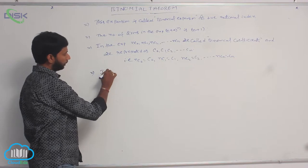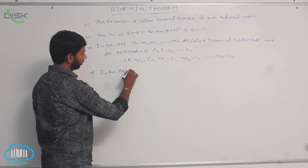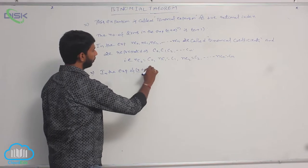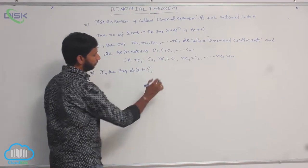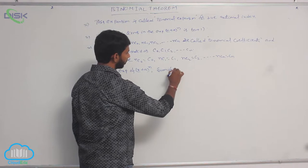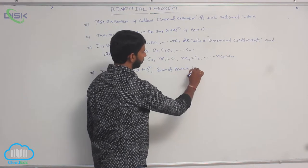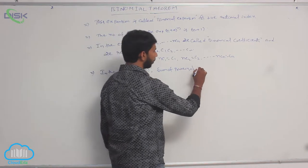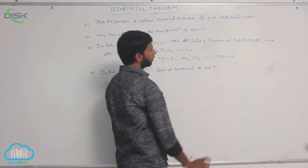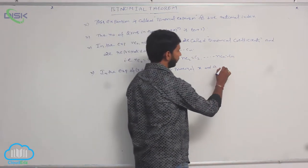In the expansion of (x + a)^n, the sum of powers of x and a is n.